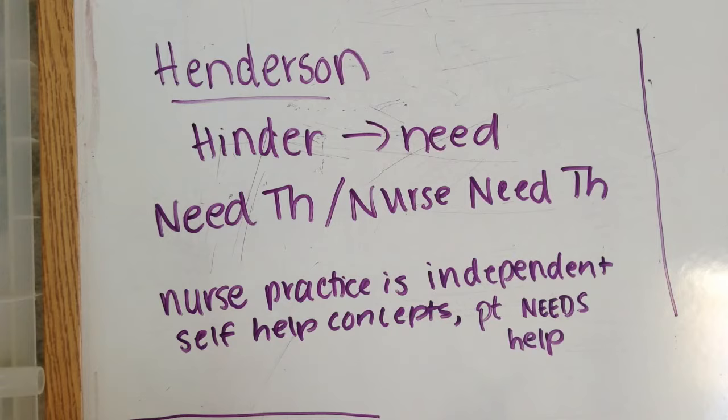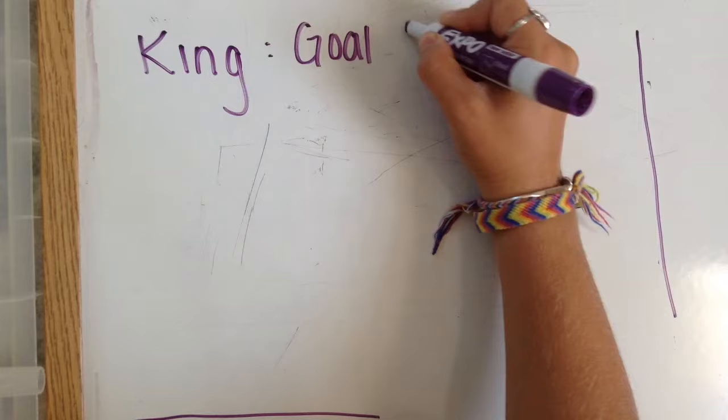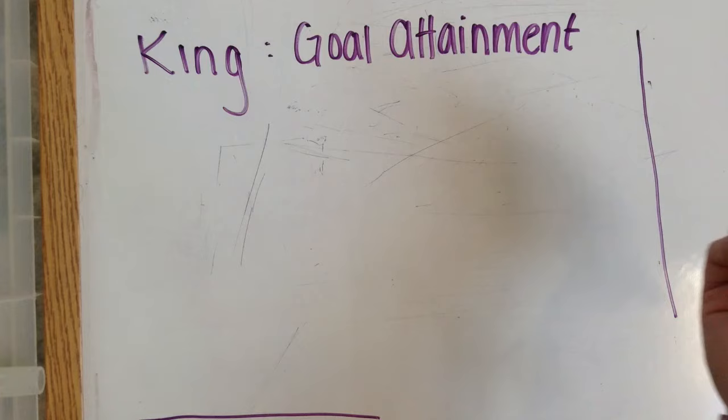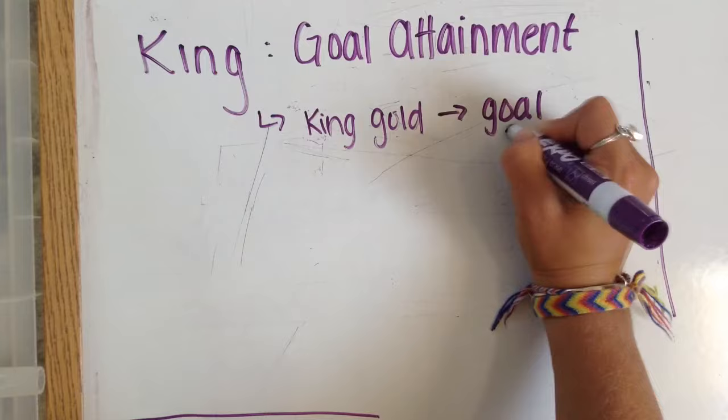Next up, we have King. King's theory is going to be the goal attainment theory. You can imagine a scenario where a king is holding a meeting with his people — sitting on his throne — and one citizen, a.k.a. the patient, tries to address an issue within the social system. You can also think that a king wants gold, a.k.a. the king wants goal — goal attainment.